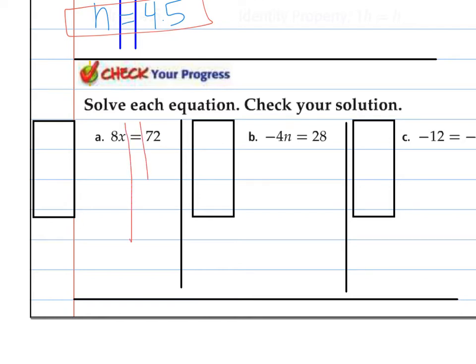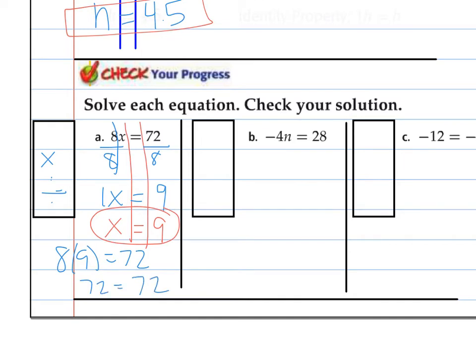I'm going to start with my train tracks. I like to say, what is happening to X to get to 72? It's being multiplied by 8. So I undo multiplication with division. I divide by 8, because the goal is to get the variable alone. And 8 divided by 8 is 1, so I get 1X. 72 divided by 8 is 9. I don't need that 1 there, so I can really just write this as X equals 9. We can check. 8 times 9 should be 72, and it is, so my solution works.